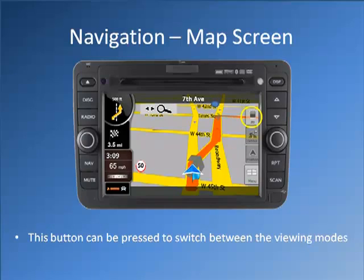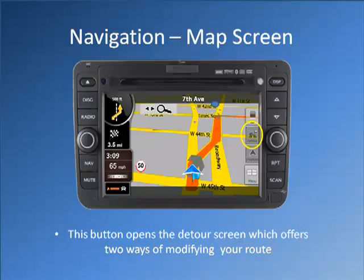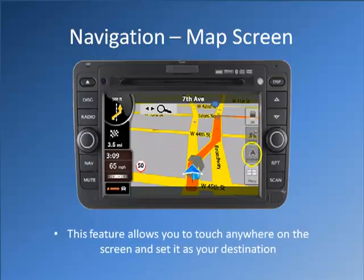This button can be pressed to switch between the viewing modes. This button opens the detour screen which offers two ways of modifying your route. This feature allows you to touch anywhere on the screen and set it as your destination.